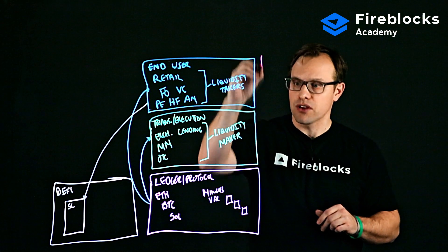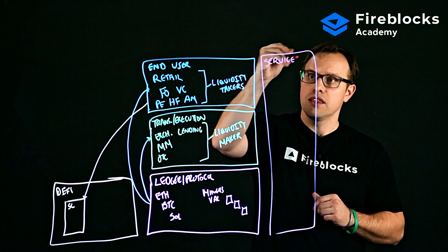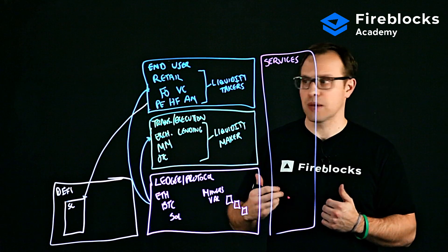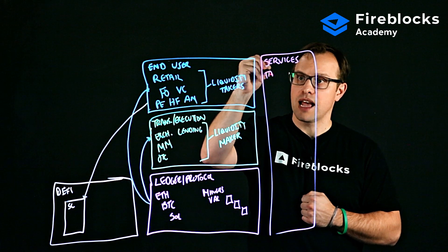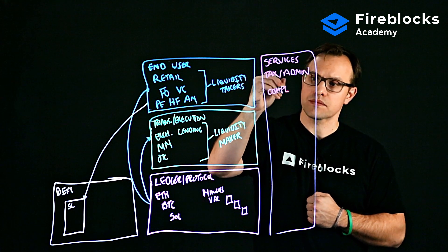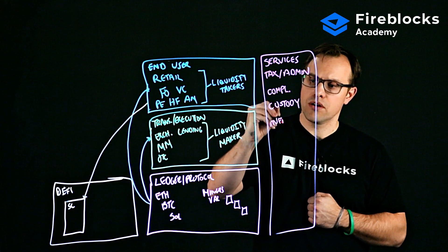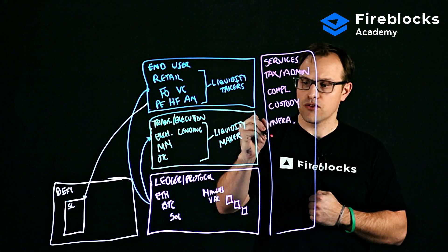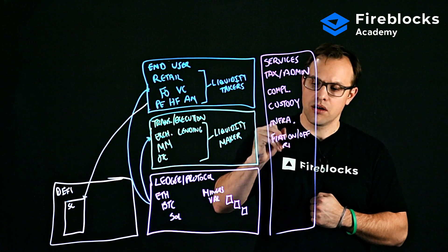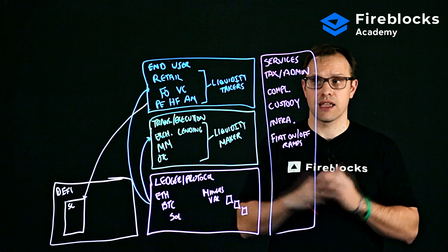The final categorization: services. And these are institutions that are going to provide enterprise-grade or institutional-grade services to the actual crypto capital markets players. This could be tax or admin, it could be compliance, it could be custody, it could be infrastructure or infrastructure services. It could also be fiat on and off ramps, which is essentially taking crypto, turning it to cash or taking cash and turning it back into crypto.